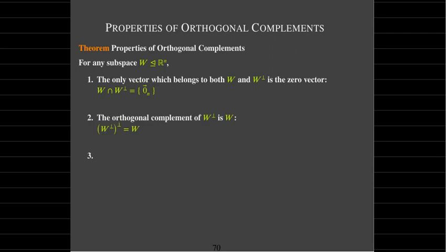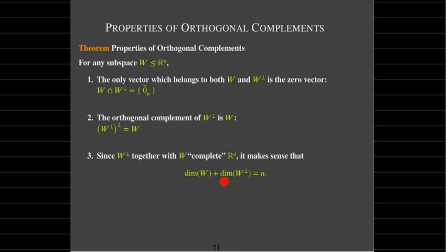The orthogonal complement of W-perp is W — in other words, W-perp and W are orthogonal complements of each other, so (W-perp)-perp = W. And since W-perp together with W complete Rn, it follows that the dimension of W plus the dimension of W-perp equals n. For example, the dimension of the plane is 2, the dimension of the line is 1, add them to get 3, the whole R3 space.